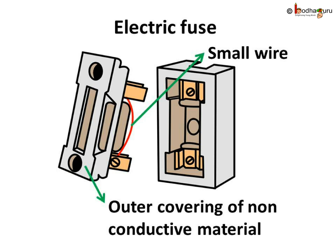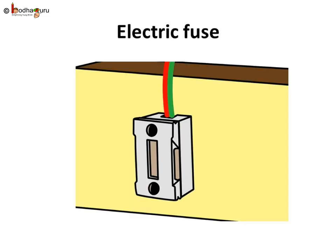An electric fuse is made for this purpose only. An electric fuse is a piece of wire which melts and thus breaks the circuit when the current flow increases suddenly, saving the other parts of the circuit and our valuable appliances. This wire is kept inside a cover made of plastic or other non-conductive materials and is easily replaceable like a bulb. At homes or even in other buildings, you might have seen these fuses inserted in all the electrical circuits.